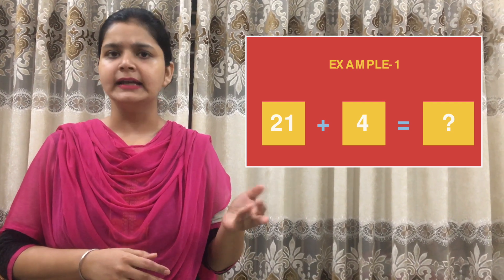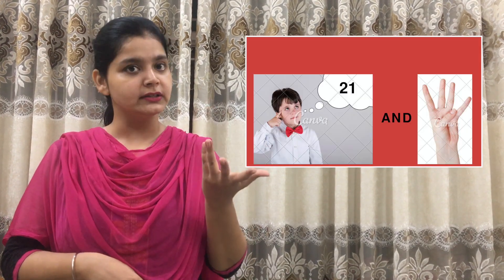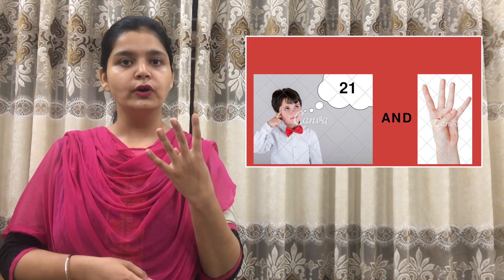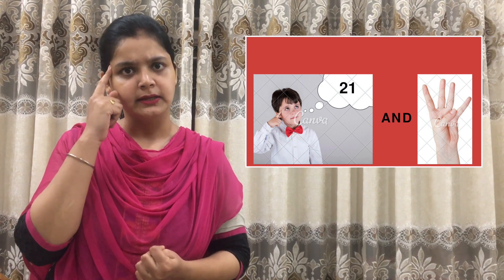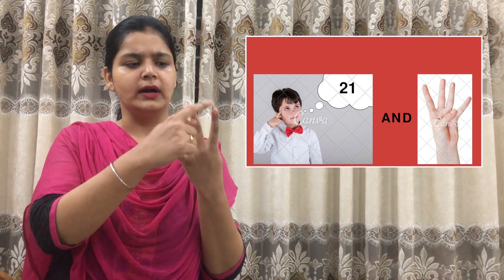I'm here to tell you how to count and how to add these numbers. Let's take an example. Suppose we have the number 21 and another number is 4, and we have to add these numbers. We only have 10 fingers, so how can we add 21 and 4? For this we will use our mind and our fingers. We will keep 21 in our mind and we will count 4 fingers.